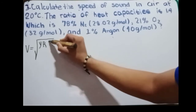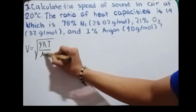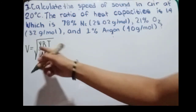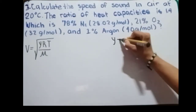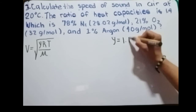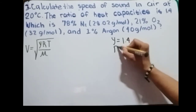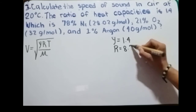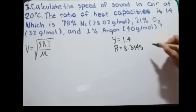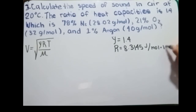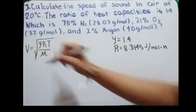Air is composed of 78% nitrogen gas with 28.02 grams per mole, 21% oxygen gas with 32 grams per mole, and 1% argon with 40 grams per mole. Let's get all the given values. Gamma, which represents heat capacity, has a value of 1.4.